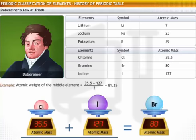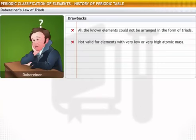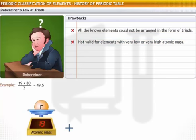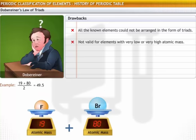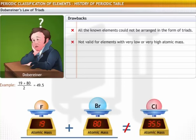While this law worked for some elements, it was not a success because all the known elements could not be arranged in the form of triads. The law did not hold good for elements with very low or very high atomic mass. For example, the arithmetic mean of the atomic masses of fluorine, 19, and bromine, 80, which comes to 49.5, varies significantly from the atomic mass of chlorine, which is 35.5.